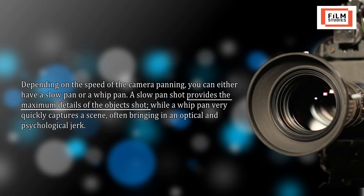In the early history of cinema, camera movement was very limited, largely due to the mammoth size of cameras. Modern cinematography, especially with portable cameras, makes use of many different camera movements. In a pan shot, the camera — fixed on a tripod or mount — captures the movement of a cinematic object or a wide landscape by moving from left to right and vice versa. Depending on the speed of panning, you can have a slow pan or a whip pan. A slow pan provides maximum details while a whip pan very quickly captures a scene, often producing an optical and psychological jerk.